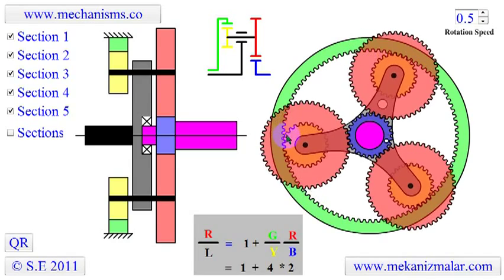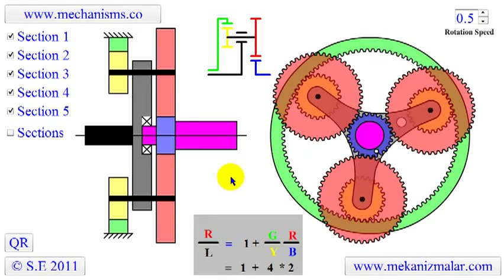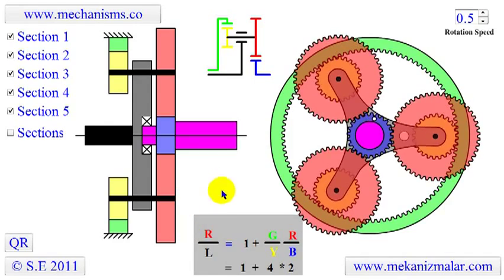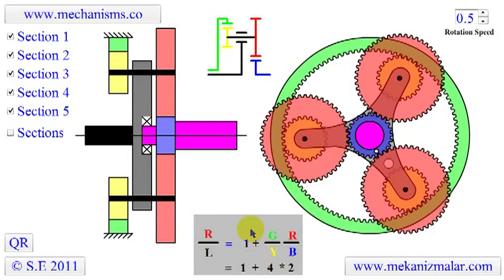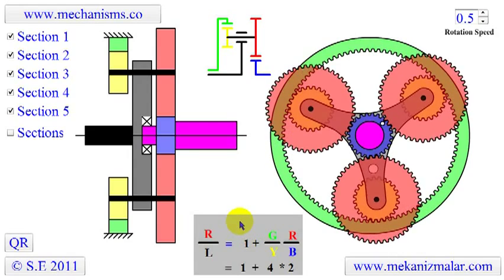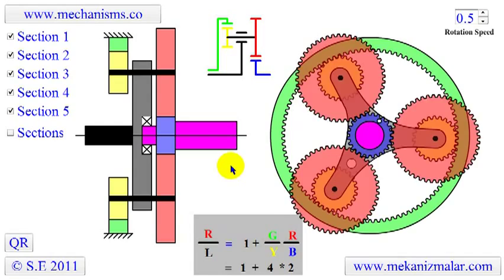Disadvantages include high bearing loads, inaccessibility, and design complexity. Also, it is harder to find the reduction ratio in the planetary gear train than conventional gear trains.